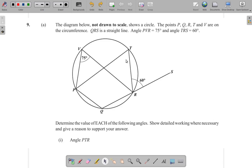Question 9. Now, it says the diagram below, not drawn to scale, shows a circle.